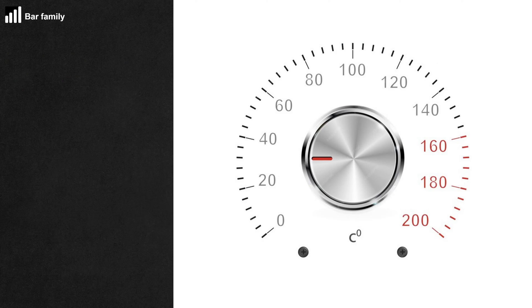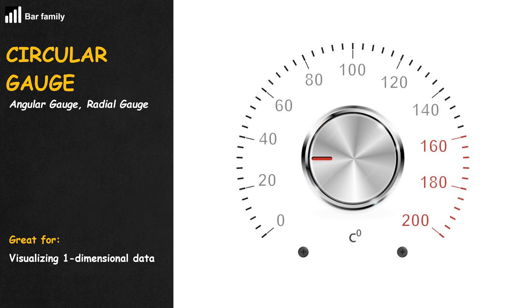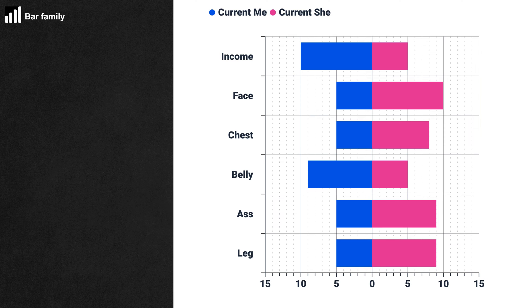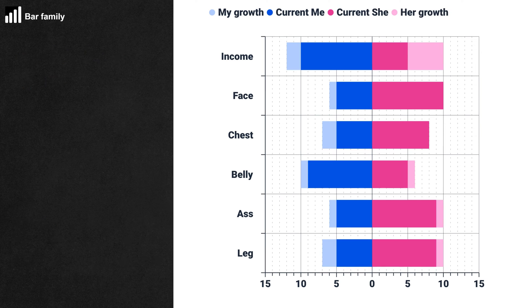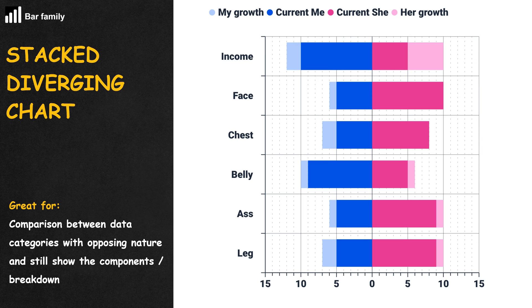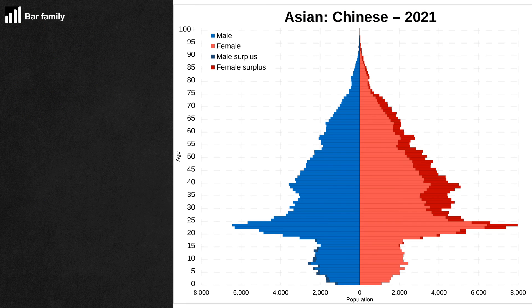When a radial bar only has one value, it's a circular gauge. When people want to take advantage of the left side of a bar chart, we have the diverging chart. If the diverging chart has stacked bars, we add the word stacked to the name.